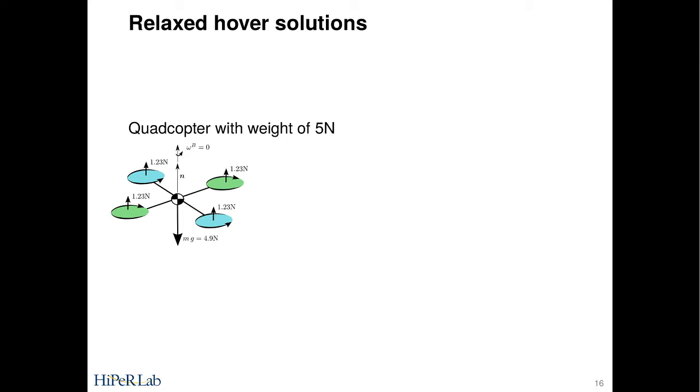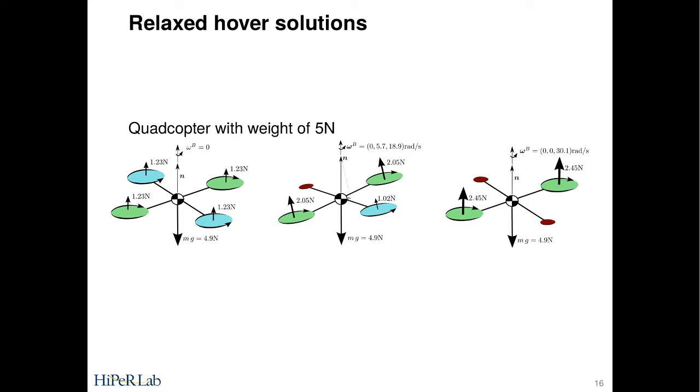So what does this look like for a quadcopter? If you have the quadcopters that we used in the lab for these experiments, they weigh about half a kilogram, so a five-Newton weight. If I have four propellers, each propeller produces 1.2 Newtons of thrust. This is classical hover. Once I start removing propellers, this changes. If I have three propellers, the force required goes up to two Newtons of force, and the vehicle has to be rotating at something like 18 radians per second, which is something like 3 hertz.